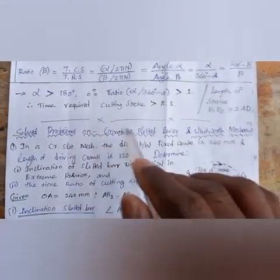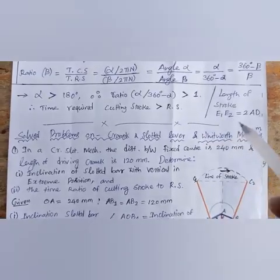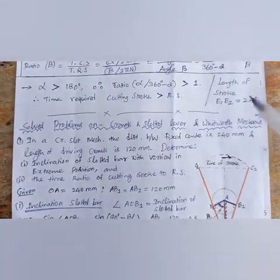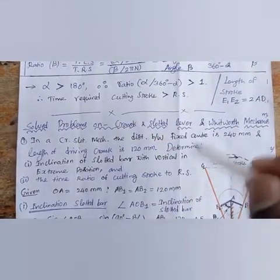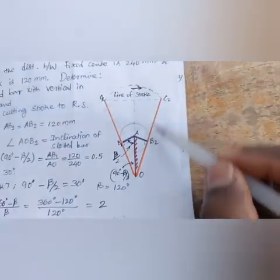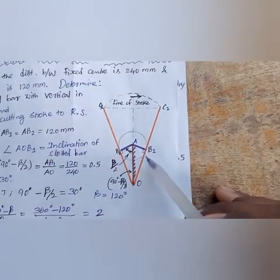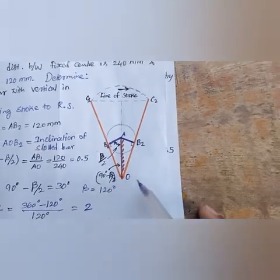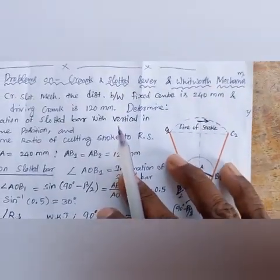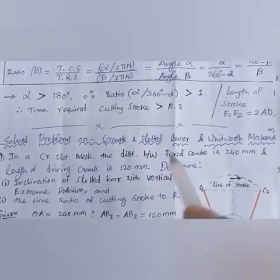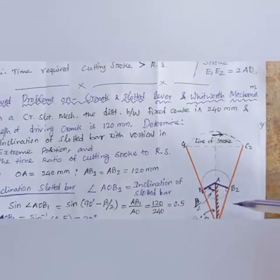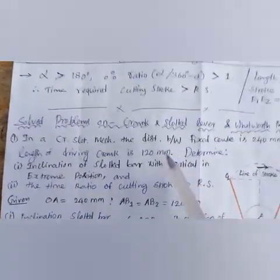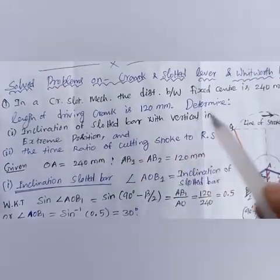Now we solve problems on crank and slotted lever and Whitworth mechanisms — very important for public sector exams. Problem: In a crank and slotted lever mechanism, the distance between fixed centers OA is 240 mm and the length of the driving crank AB1 equals 120 mm. Determine the inclination of the slotted bar with the vertical in the extreme position and the ratio of cutting stroke to return stroke.